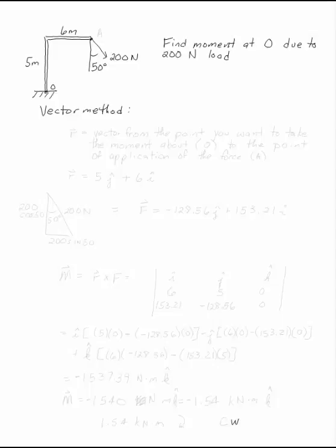Find the moment at O due to the 200 newton load acting at the end of the light pole. We're going to do it using the vector method here. R is the vector from the point of interest to the point of application of the force.